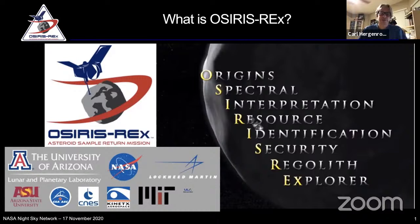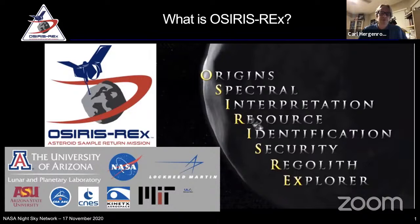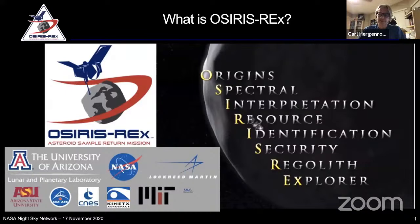OSIRIS-REx is a collaboration between many groups: the University of Arizona running the science team, NASA Goddard doing overarching management and navigation, and Lockheed Martin building the spacecraft. Other universities like Arizona State, MIT, and Harvard contributed instruments, and a private company called Kinetics does a lot of our navigation - really flying the spacecraft through the solar system. We also have significant contributions from the Canadian Space Agency, which contributed an instrument, and CNES, the French space agency.